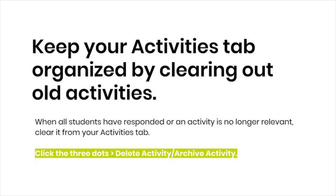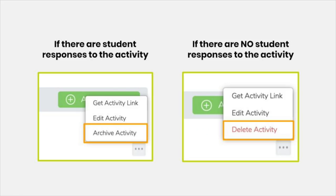When students complete activities, those activities disappear from their Activities tab, but they don't disappear from your Activities tab. To keep your activities organized, you can archive or delete old activities from your Activities tab. Simply click on the three dots on the activity and click Archive or Delete. If there are student responses, you'll be prompted to Archive — student responses are not deleted, this just clears the activity from your tab. If no students have responded, you'll be prompted to delete the activity. You can always go back to My Library and assign it again.